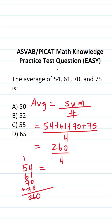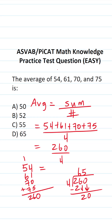Now I'm going to do the long division here to get our answer. We have 260 divided by 4. 4 goes into 26, 6 times without going over. 4 times 6 is 24. 26 minus 24 is 2, bring down this 0. 4 times 5 is exactly 20 with no remainder. So the average of 54, 61, 70, and 75 is 65.